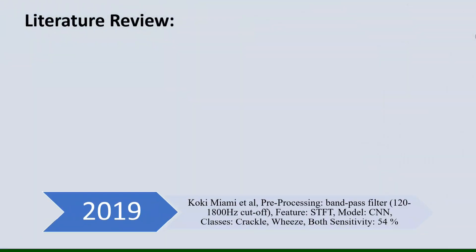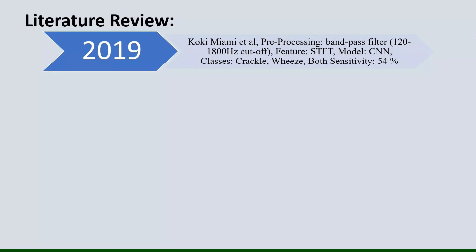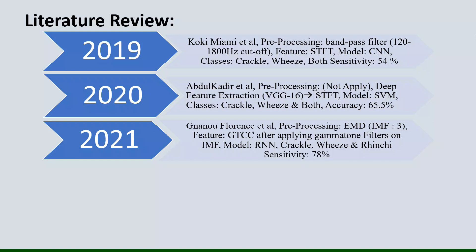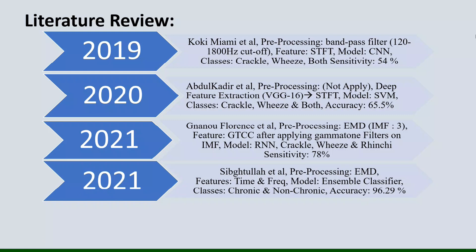Literature review. In 2019, a research team computed STFT features from lung sounds and used them with a CNN model, achieving a sensitivity of 54%. In 2020, another team computed STFT features with SVM, achieving an accuracy of 65.5%. In 2021, one team computed GTCC features with an RNN model achieving 78% sensitivity, while another team computed time and frequency features with ensemble classifiers achieving 96.29% accuracy.